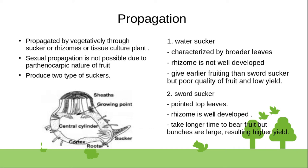Two types of suckers are water sucker and sword sucker. Water sucker is characterized by broader leaves, while sword sucker is characterized by pointed narrow leaves. The rhizome is not well developed in water sucker but is well developed in sword sucker. Water sucker gives earlier fruiting than sword sucker but produces poor quality fruit and low yield.